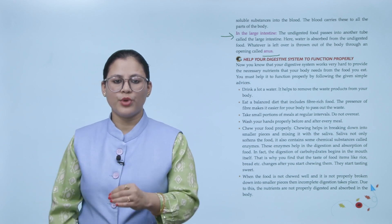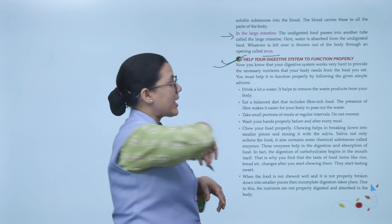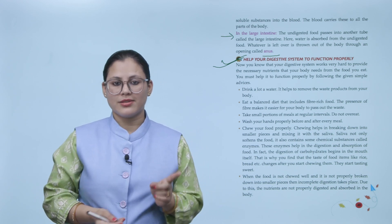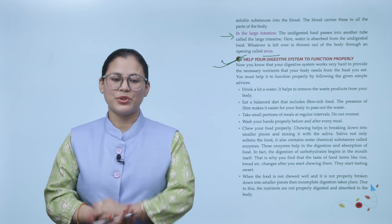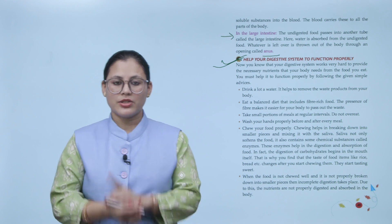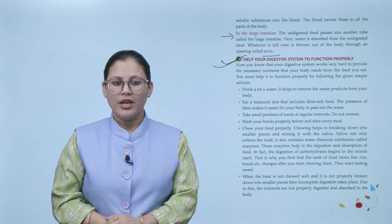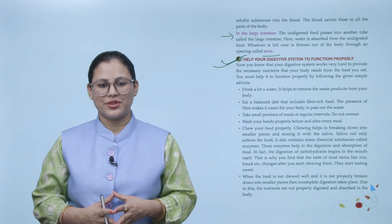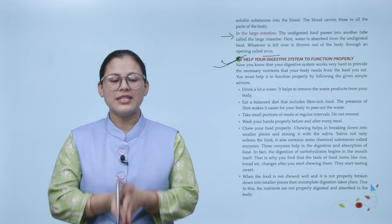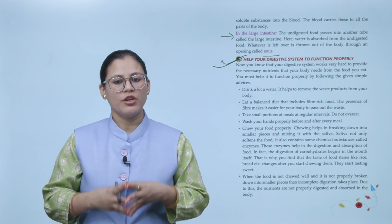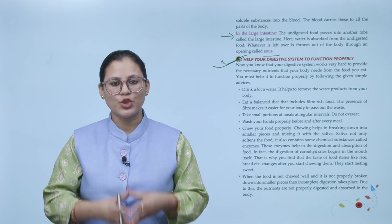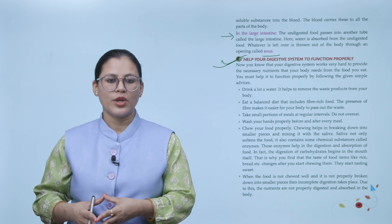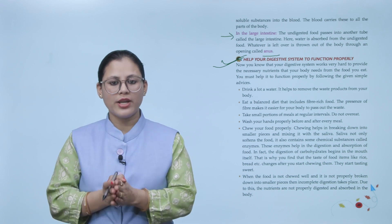Help your digestive system to function properly. Now you know that your digestive system works very hard to provide the necessary nutrients that your body needs from the food you eat. You must help it to function properly by following the given advices. You understand how much hard work your digestive system does, right? So you should also help the digestive system. How? Let's see. Drink a lot of water. It helps to remove the waste product from your body. Eat a balanced diet that includes fiber rich food. The presence of fiber makes it easier for your body to pass out the waste. Take small portions of meals at regular intervals. Do not overeat. Wash your hands properly before and after every meal.